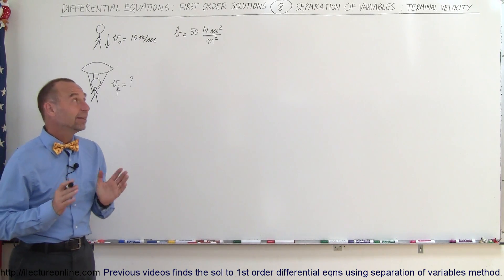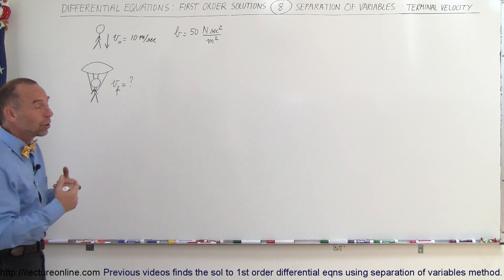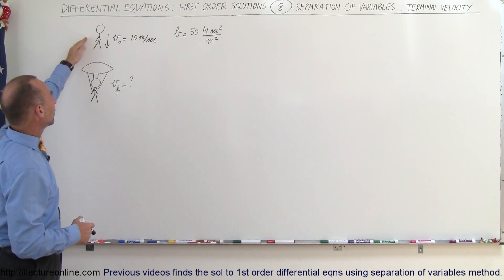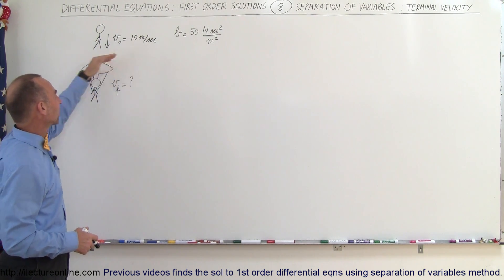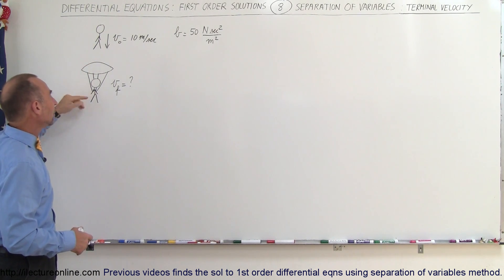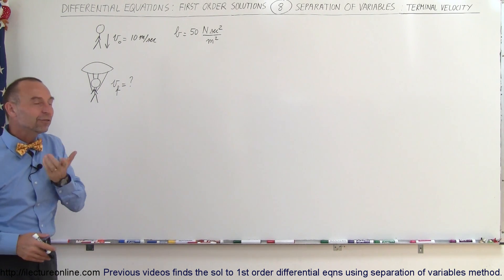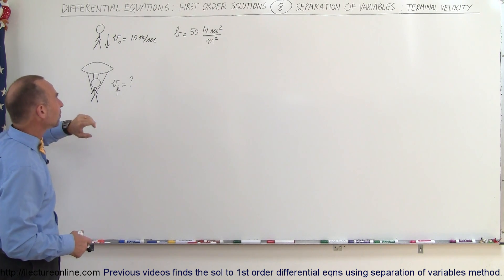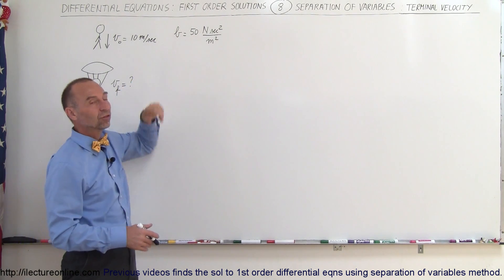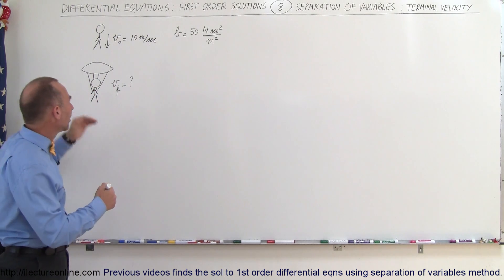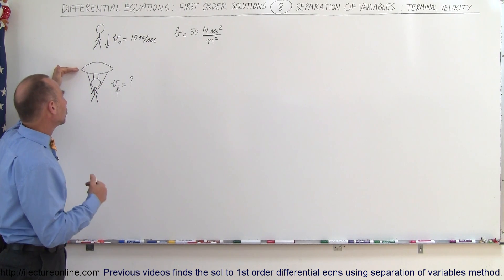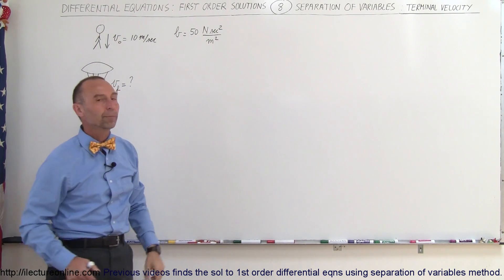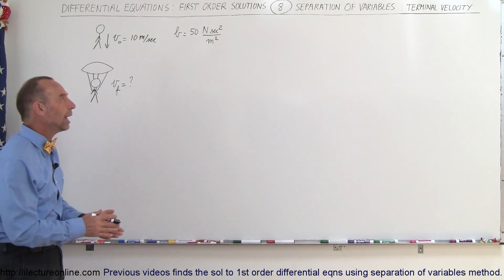Welcome to our lecture. In this example we're going to talk about what we call terminal velocity. We have a person jumping out of an airplane, and when the person reaches a speed of 10 meters per second, they pull on the parachute. We need to figure out what will be the final velocity of the person floating down in the air with the parachute, considering that b, a constant relating the drag resistance of the parachute, is estimated to be 15 newton second squared per meter squared. So how do we do that?